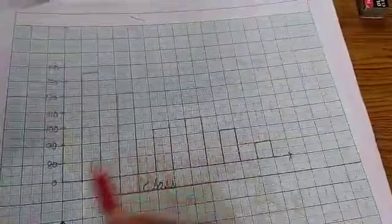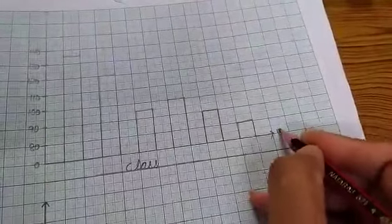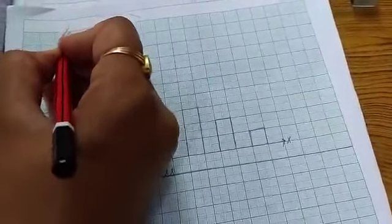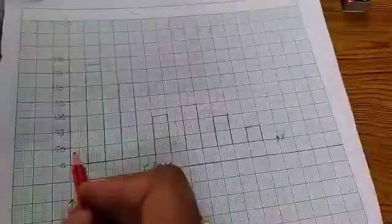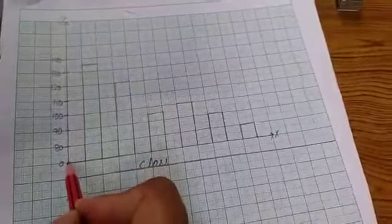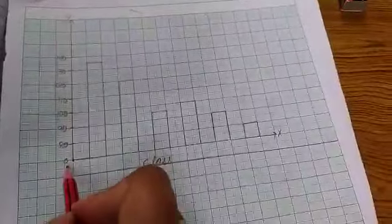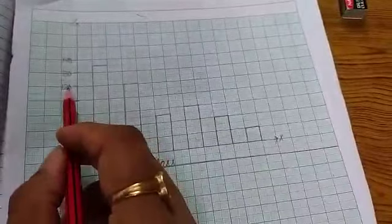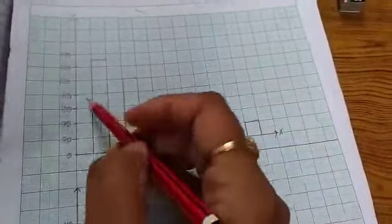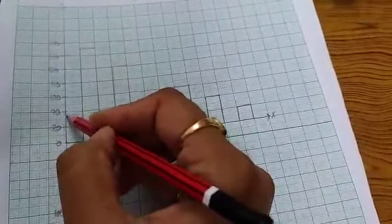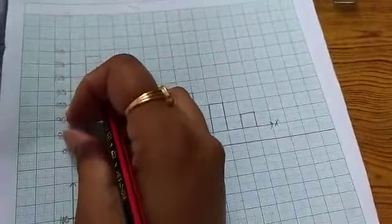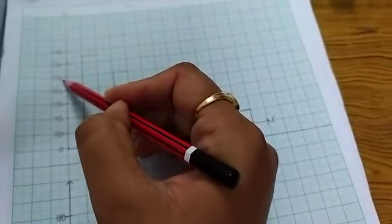First of all, draw horizontal and vertical line. This line is x-axis and this one is y-axis. Now, this point will be origin. Here we write 0. This is the fixed origin point where two axes meet. After that, I write 80, 90, 100, 110, 120, 130 and 140. Here, one unit means 10. This is the gap of 10.